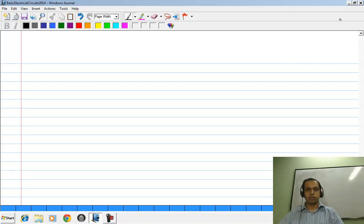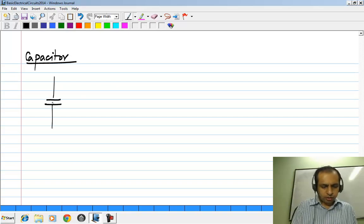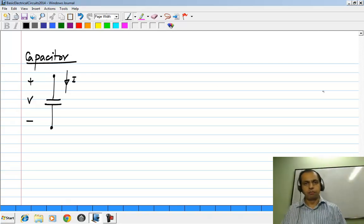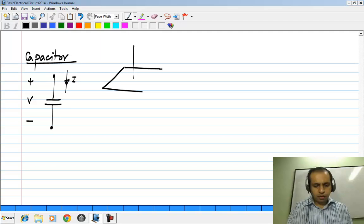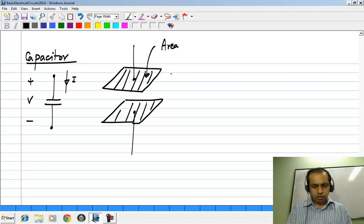The next basic element is a capacitor, and it is given by this symbol. As usual, we define a voltage V and a current I consistent with passive sign convention. I think from basic physics classes, all of you would be familiar with the prototype structure of a capacitor, which consists of two parallel plates with some area and some distance between them.